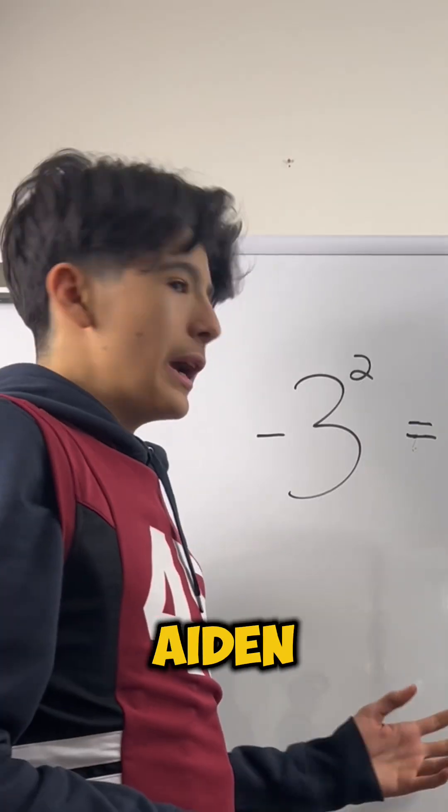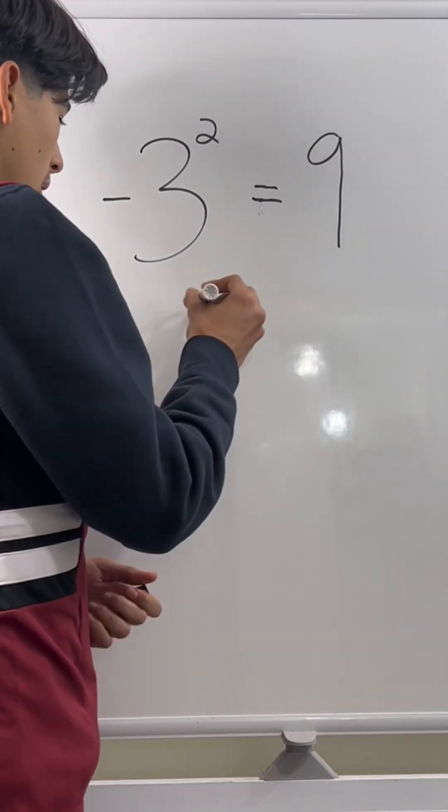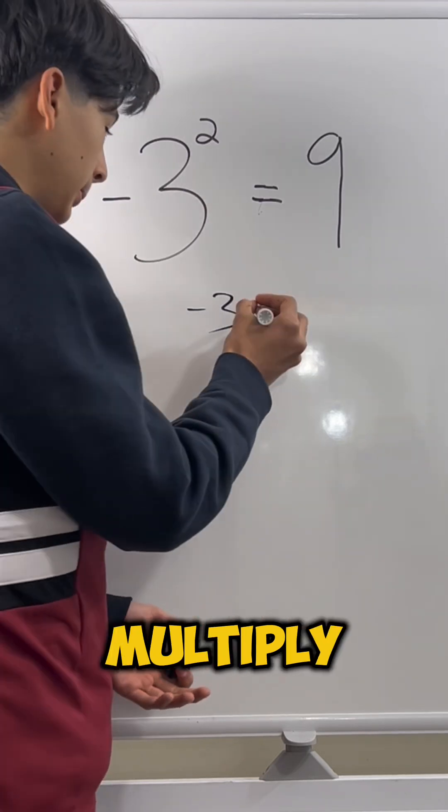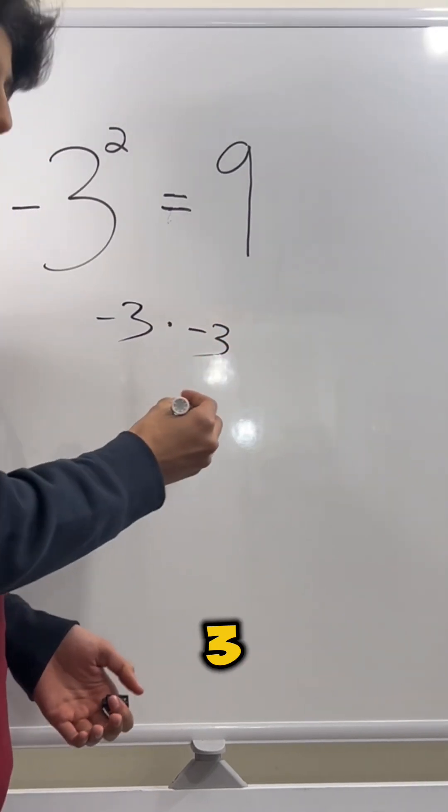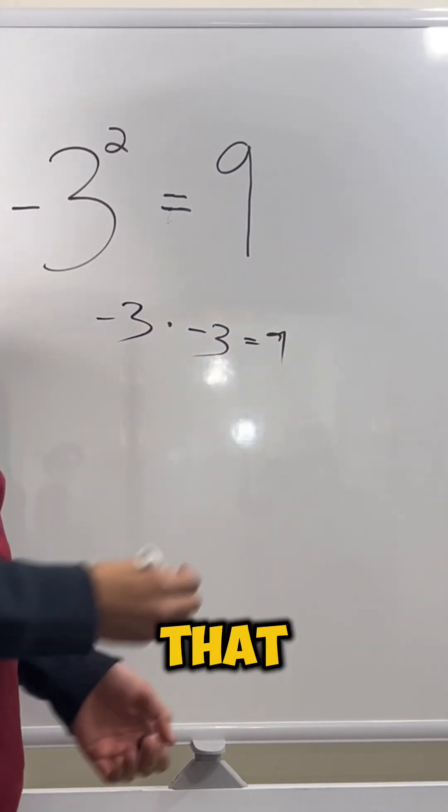Now, you may be thinking, if you have negative 3 and you multiply it by negative 3, isn't that just 9? That is true.